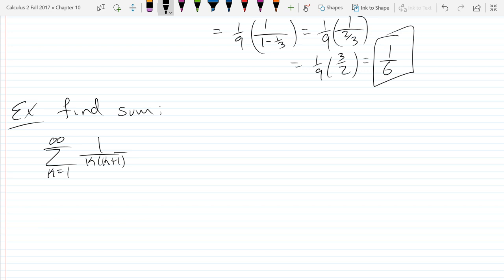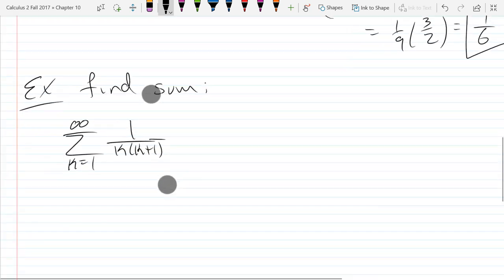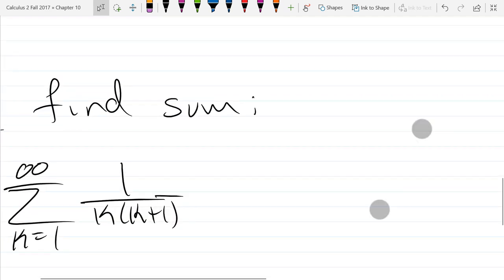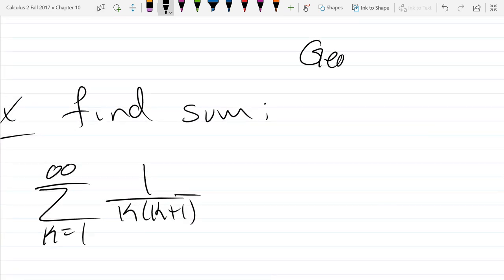The only infinite sum we know how to find so far is geometric series. How do I know this is not a geometric series? What would it look like if it were a geometric series? It would look like r to the n equals 0 or 1 going to infinity. So this does not look at all like a geometric series.